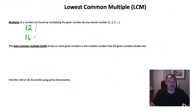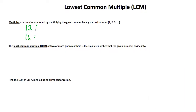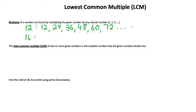Let's switch over to multiples. Multiples of a number are found by multiplying the given number by any natural number — that is, 1, 2, 3, and so on. So to get the multiples of 12, I can go 12 times 1, 12 times 2 which is 24, 12 times 3 which is 36, and so on. We're basically going up by 12 each time — these are all the multiples of 12.